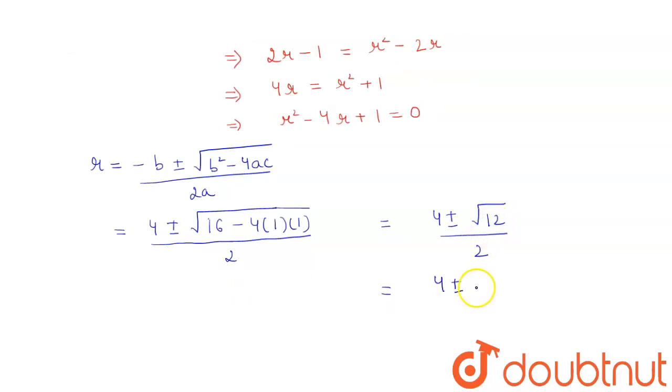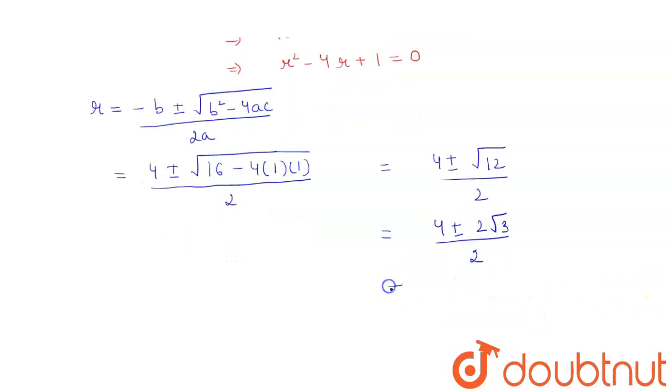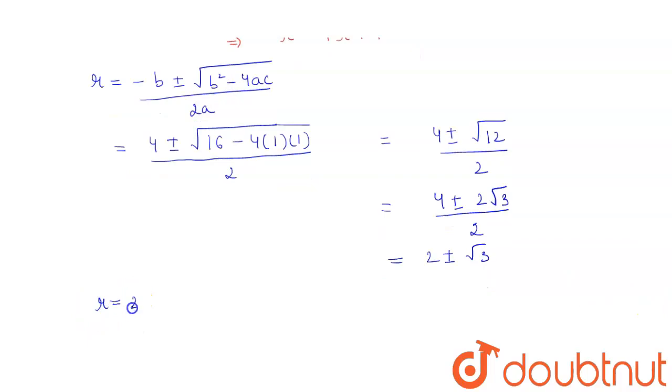2. We can write this as 4 plus minus, we can take 2 to be common, so we will get under root 3 divided by 2. Here, canceling out 2, we will get 2 plus minus under root 3, so the possible values of r is